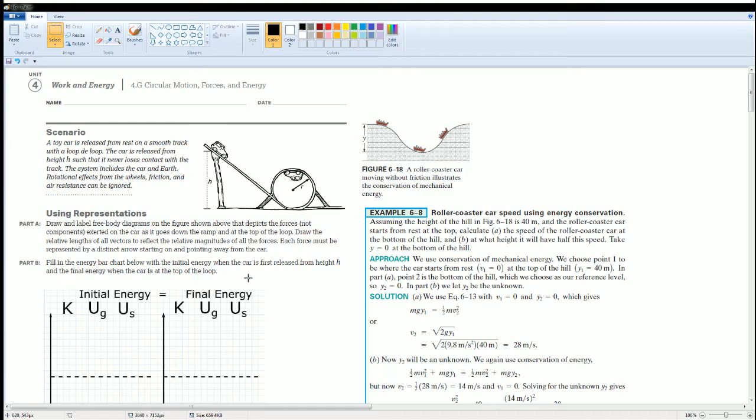Here's the scenario. The toy car is released from rest on a smooth track with a loop-de-loop. The car is released from height H such that you never lose contact with the track. The system includes the car and earth. Rotational effects from the wheel, friction, and air resistance can be ignored.